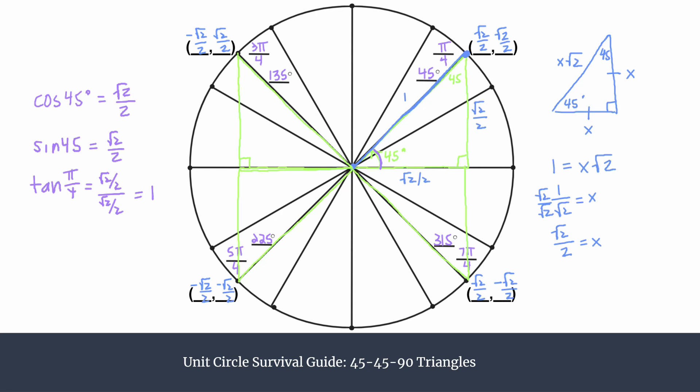So this was a review of 45-45-90 triangles and how we can use them to find coordinates in the unit circle. Check out the other videos on special right triangles and how we use them in the unit circle. I'll have some other videos on labeling the unit circle angles in degrees or in radians and so much more. So thanks so much for watching and good luck!